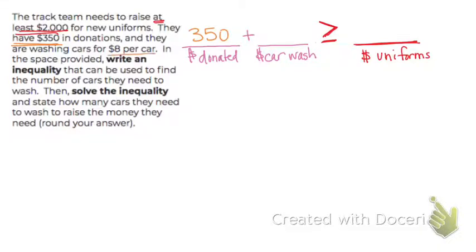And then with the car wash, they get $8 per car. So is it just $350 plus $8? It would be $350 plus $8 if we only washed one car. But let's say we washed 10 cars. How much money would we get from the car wash? Well, if it's $8 per car, 8 times 10 would be $80. What we're doing to raise money for the car wash, we're going to get $8 times however many cars we wash. So let's call that C. And then the amount of money for the uniforms, we need $2,000.